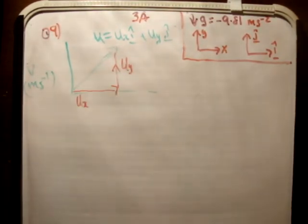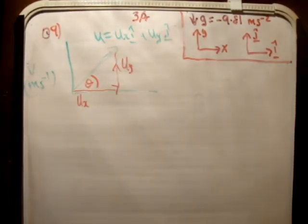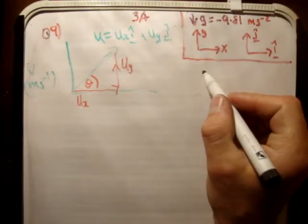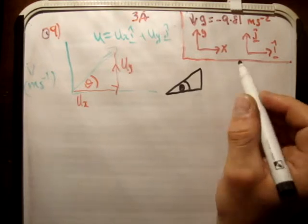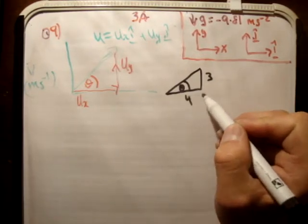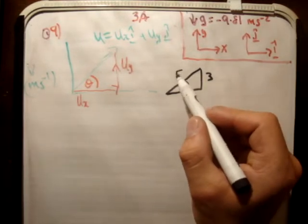I'm going to call this angle here theta. So we're given in the question that tan theta is equal to 3 quarters. So just over in the corner here if we draw theta, tan is opposite over adjacent. So if we use Pythagoras on this, the square root of 3 squared plus 4 squared, you're going to get 5.